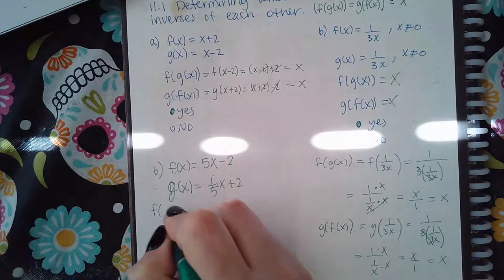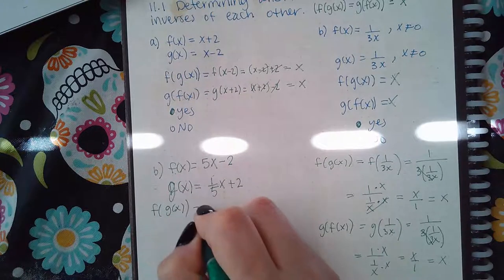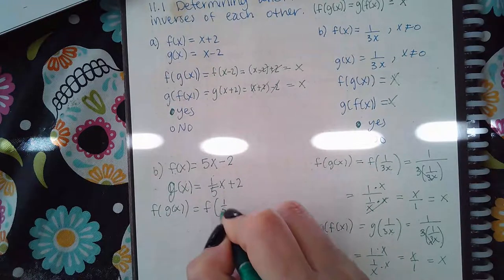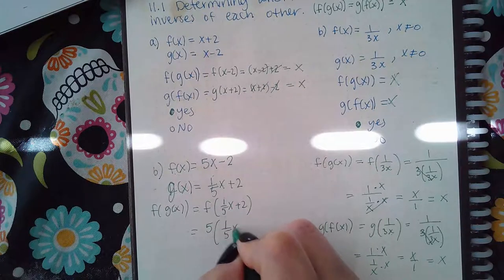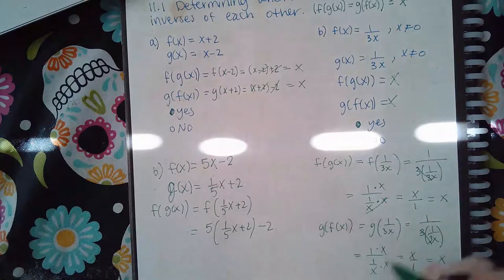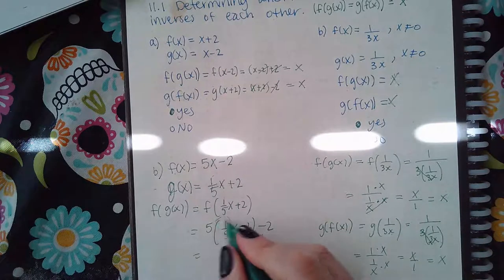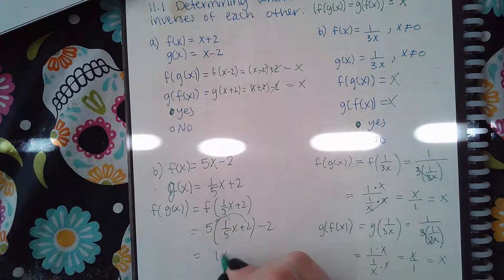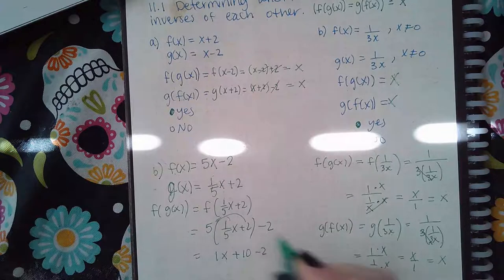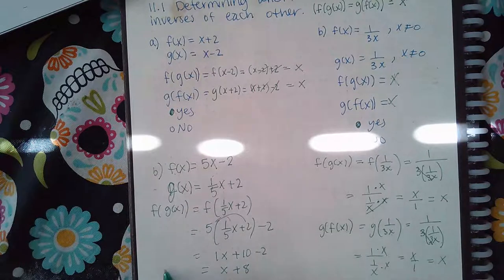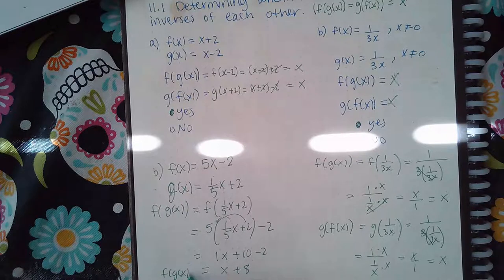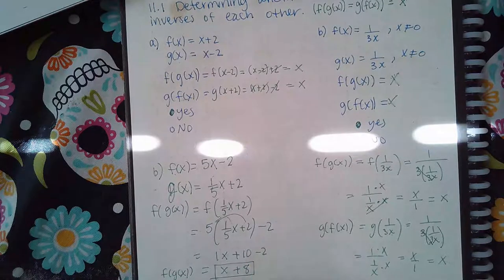When we do f(g(x)), that means f of one-fifth x plus 2, which means 5 times one-fifth x plus 2 minus 2. But when I distribute this 5, I get x plus 10 minus 2, which is x plus 8. So f(g(x)) is going to be x plus 8.